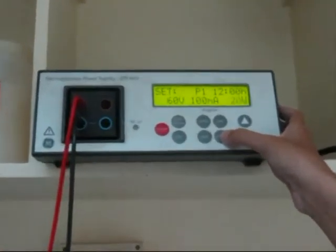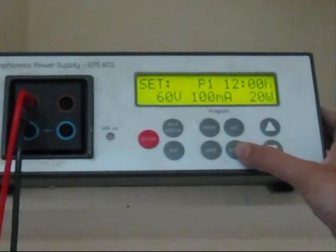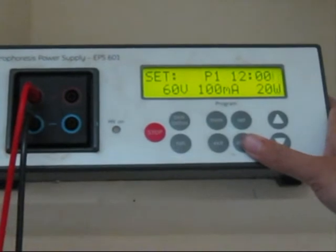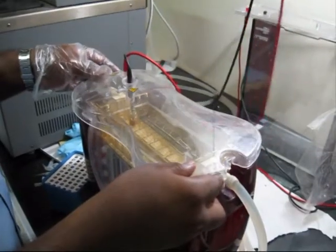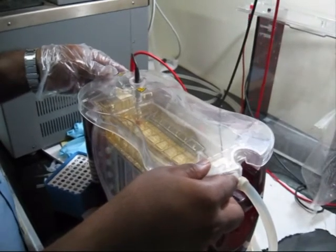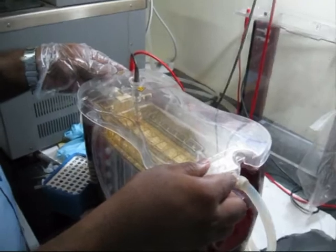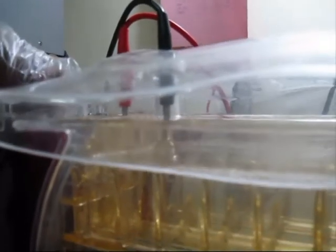The voltage for running the gel is set at 60V and 100mA. Gels are usually run at a voltage that will run the tracking dye to the bottom as quickly as possible without overheating the gels. The gels are usually allowed to run for 12 hours.